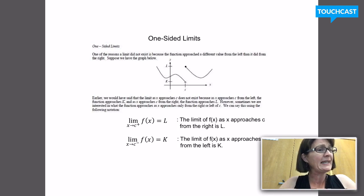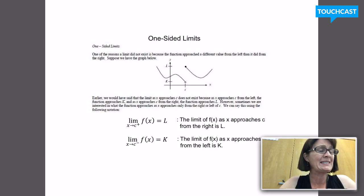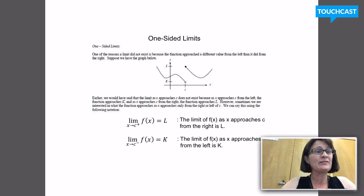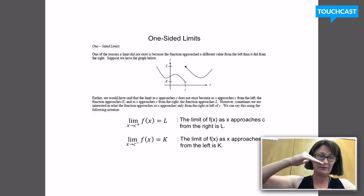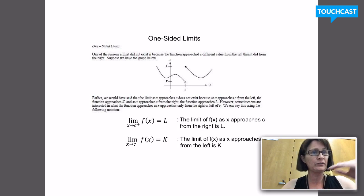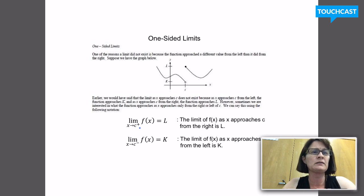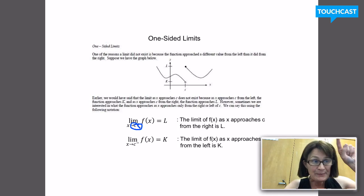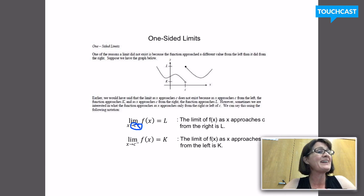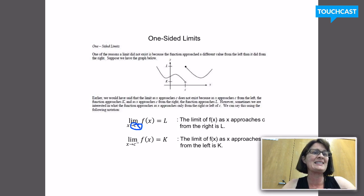There's a place in your packet to fill in a section about one-sided limits. Before we could talk about whether the limit exists, we have to understand what it means for a function to have a limit as you approach from one direction or the other. So we have this little notation — a little plus sign that comes after the x value I'm trying to approach. So I would say the limit of f of x as x approaches c from the right is l.